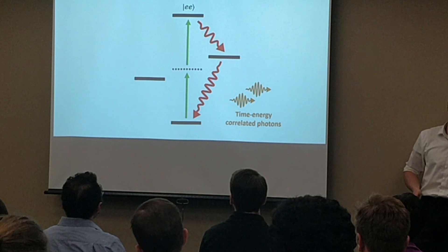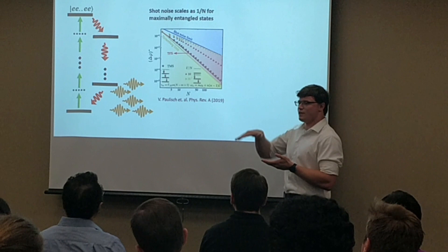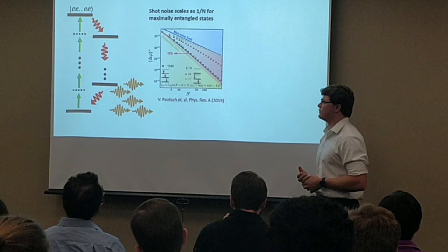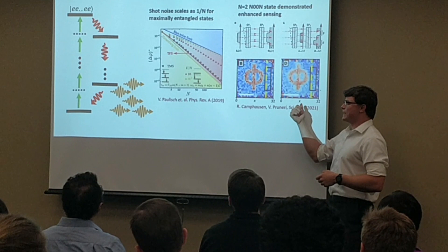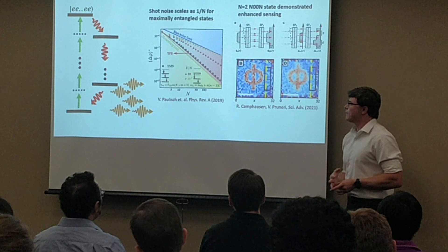If you have a maximally entangled state, you approach the Heisenberg limit of shot noise, where the phase shot noise approaches a 1/N limit, where N is the number of photons, as opposed to the 1/√N you'd get with single photon emitters. It's already been demonstrated with spontaneous parametric down-conversion — preparing N=2 NOON states — that you can get enhanced imaging below the shot noise limit. An ensemble releasing bunches of correlated photons could have sensing applications wherever few photons are desirable.